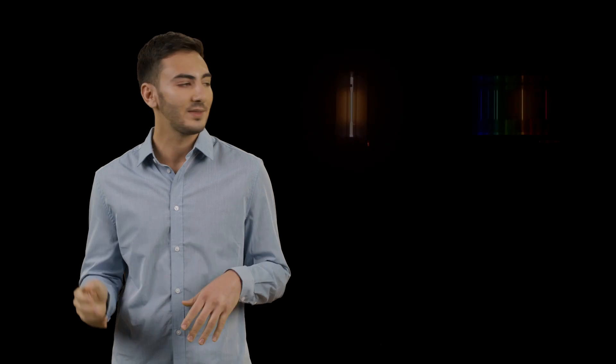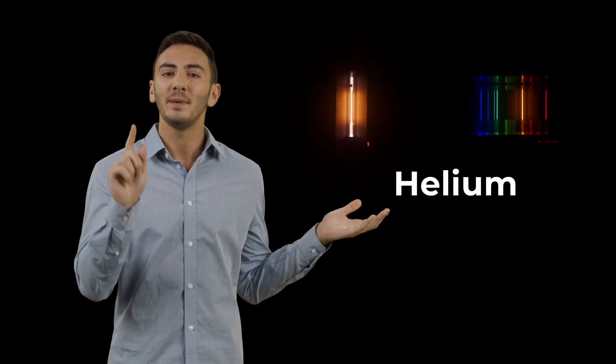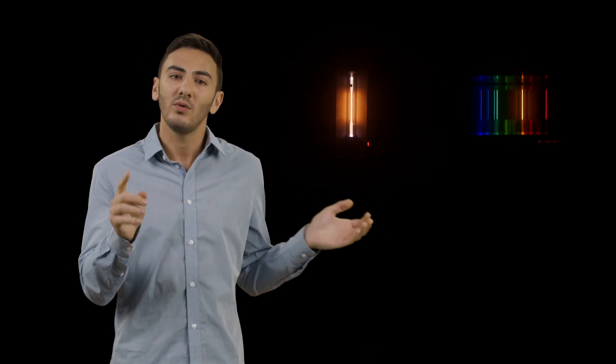If we try this with a tube of helium instead, because the energy levels of helium are quantized differently, we get a different pattern. So we can use quantization to identify things that are smaller than the naked eye can see.